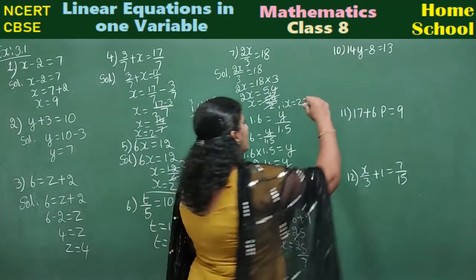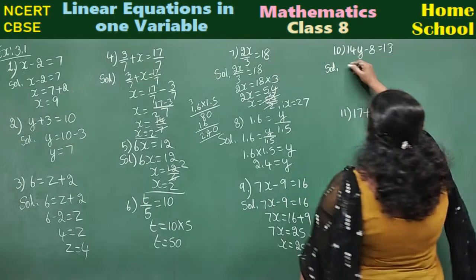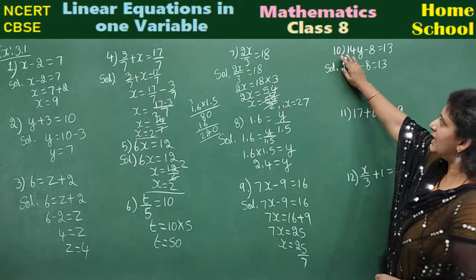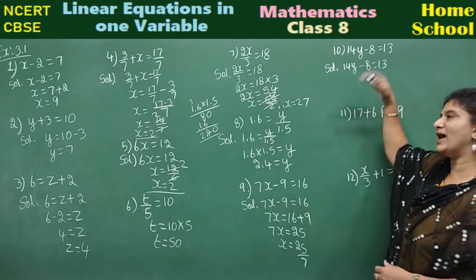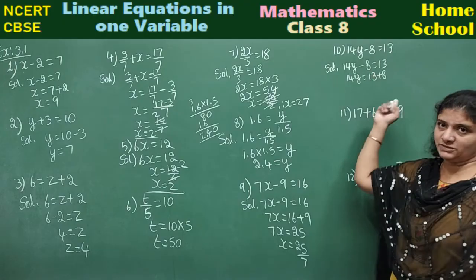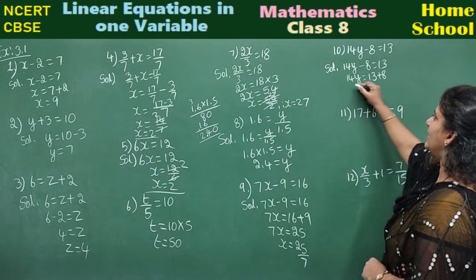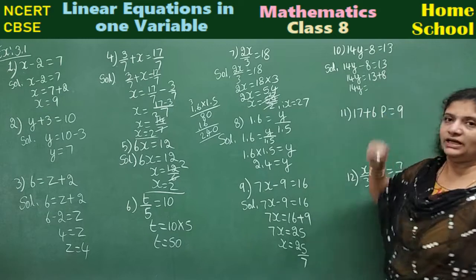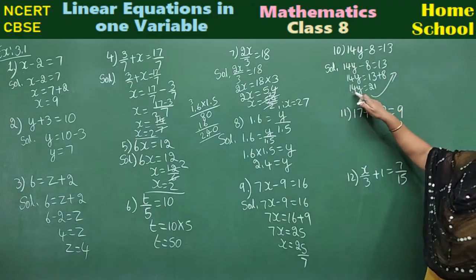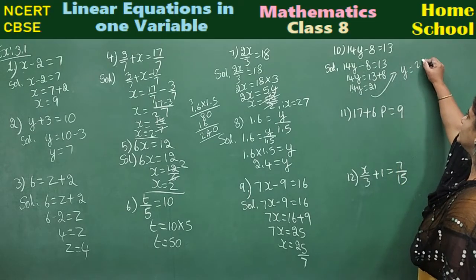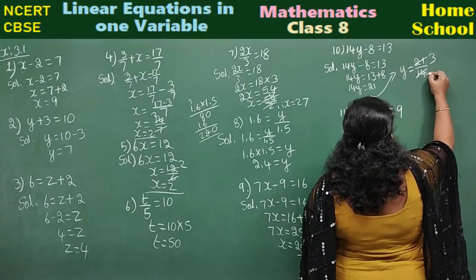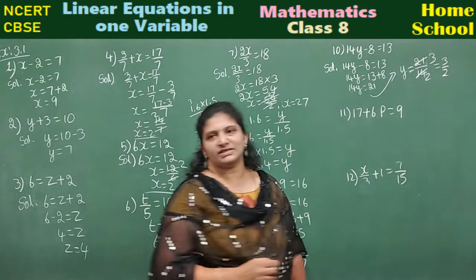Tenth: 14y minus 8 equal to 13. Variable is y. Transpose minus 8 — sign changes to plus 8: 14y equals 13 plus 8, which is 21. Then transpose 14 — it divides: y equals 21/14. Cancel with 7: y equals 3/2.